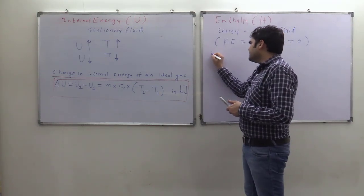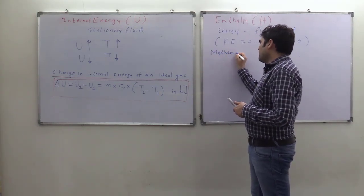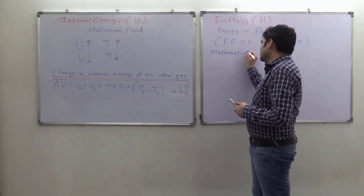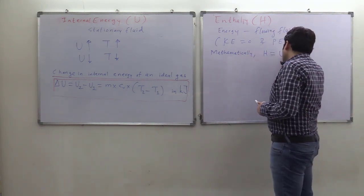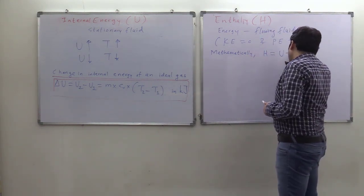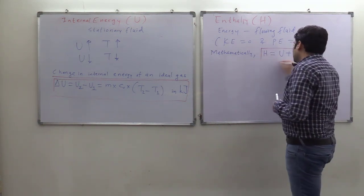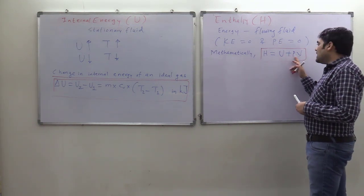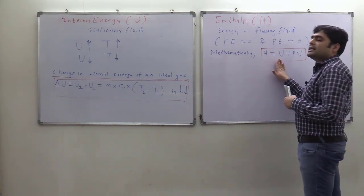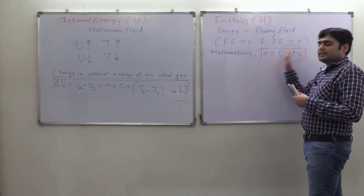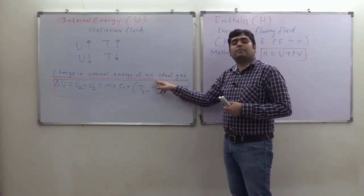Mathematically, enthalpy H is equal to U plus PV — that is, internal energy plus the product of pressure and volume. This is the mathematical definition of enthalpy.